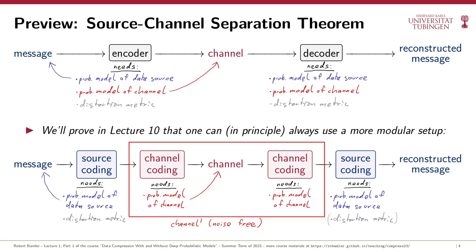So if you really have control over the entire pipeline — if you know the data source and have access to the physical noisy channel — then you might be better off not splitting your encoder and decoder into source coding and channel coding parts. That can be a good idea for problems involving very specific hardware setups with computational limitations, like drones or RFID tags. But most of the time when we communicate over the internet or store files on a file system, we don't have access to the underlying physical channel because it's already abstracted away by existing channel coding infrastructure. To some degree, the separation between source coding and channel coding is just good engineering practice — keeping complex systems modular.